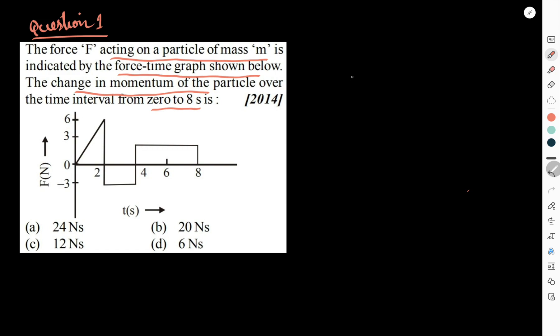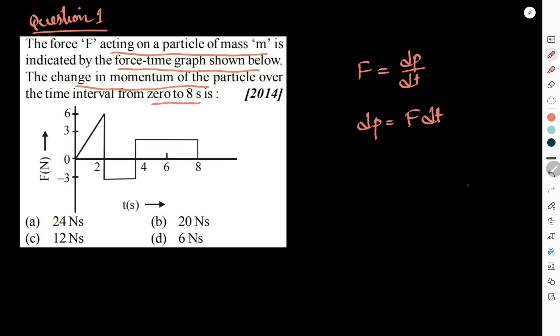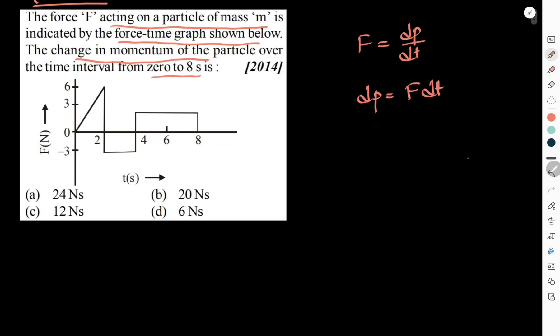Now if you know the Newton's second law of motion, rate of change of momentum is directly proportional to the external force. Or I can write F equals to dp by dt. Or change in momentum by change in time. So change in momentum is equals to F into dt. So basically it's an area under the F-t graph.